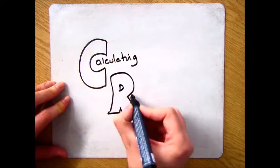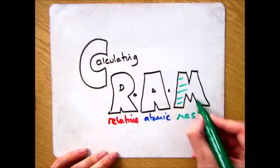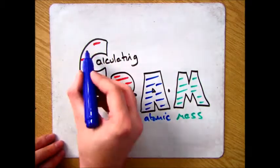Hello and welcome to this video on calculating isotopes. By the end of this video you should be able to work out the overall relative atomic mass of an isotope when given the abundances.